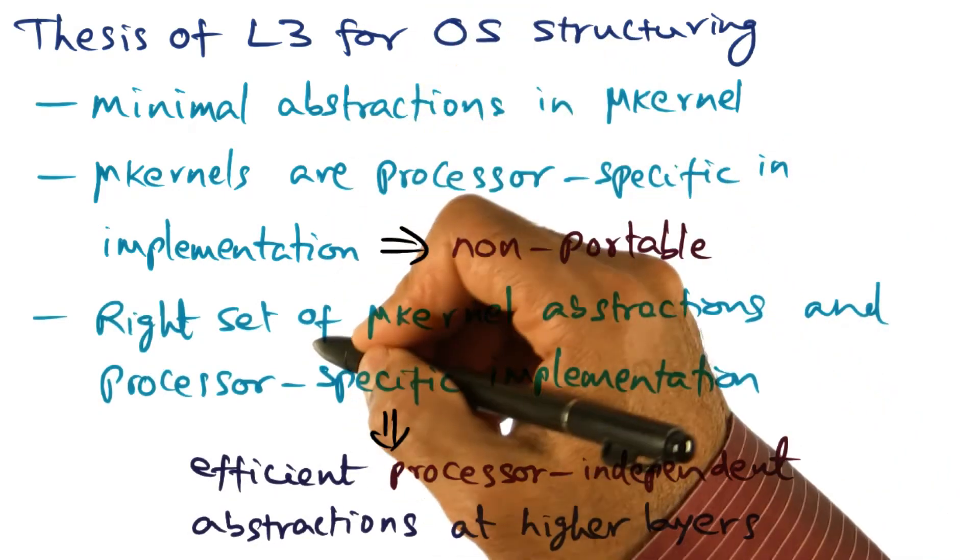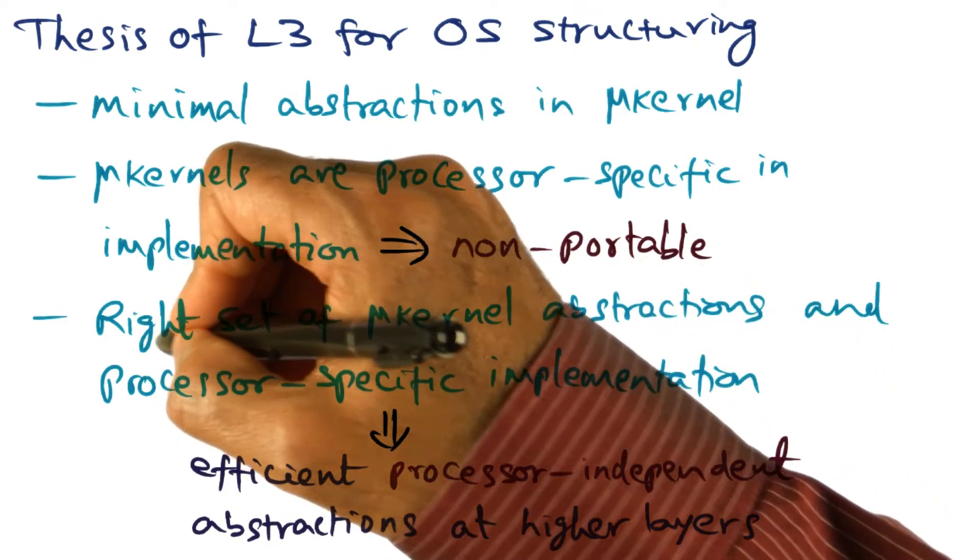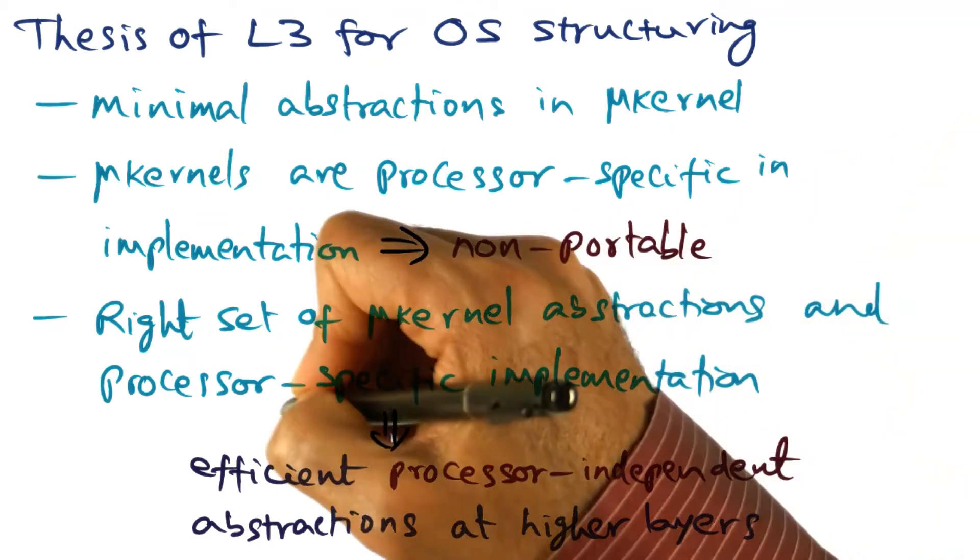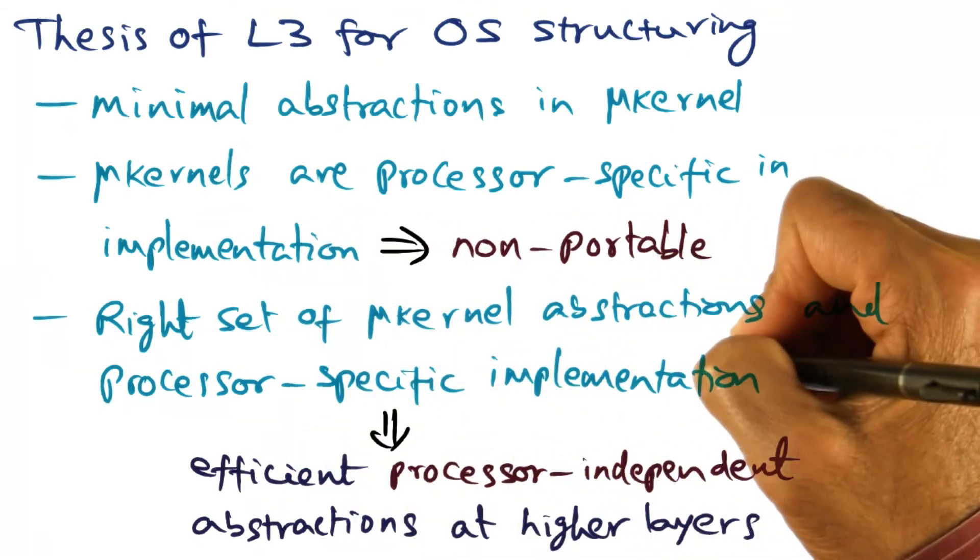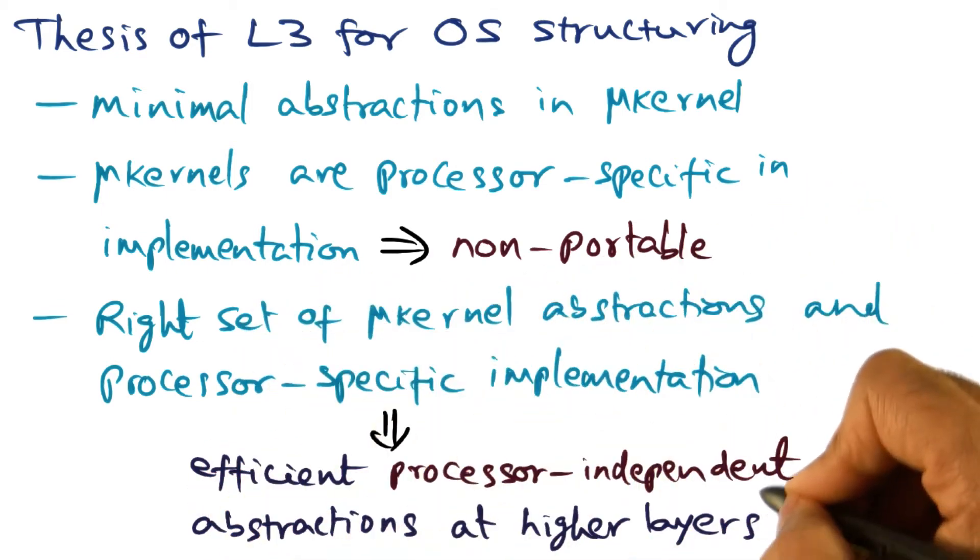If you put these two principles together, what L3 is advocating is the right set of kernel abstractions and processor-specific implementation. If you do that, then you can build efficient processor-independent abstractions at the upper layers.